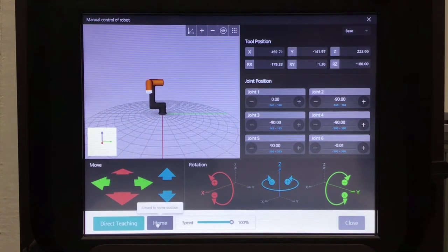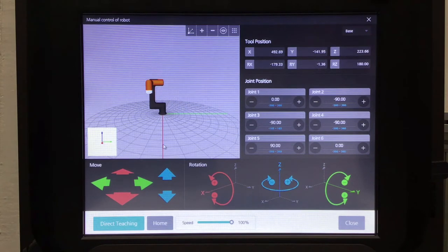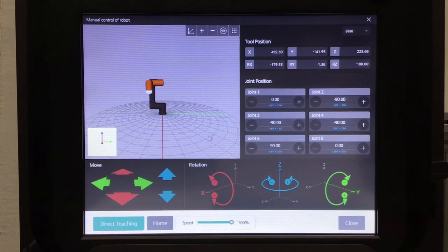Click base again, click home. All the arrows revert back to normal. I prefer base, it's much easier to see, much easier to grasp where the robot is going to move when you click these arrows.